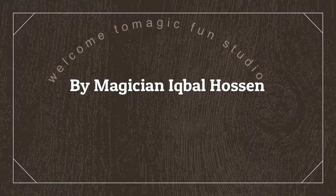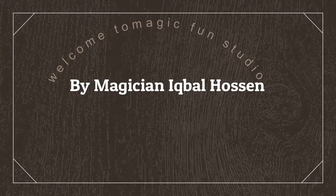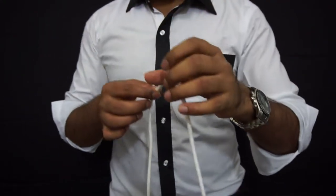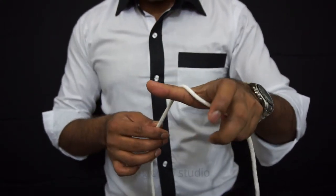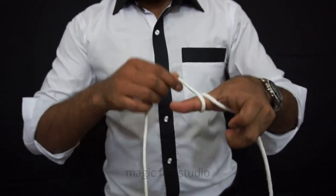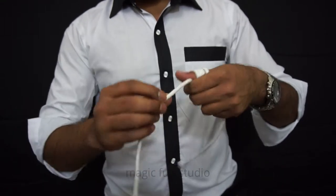Welcome to Magic Fun Studio. Today I'm going to show you a very cool rope magic trick. As you see in my hand, I have one rope, this white color rope. I'm going to roll it down around my thumb finger.